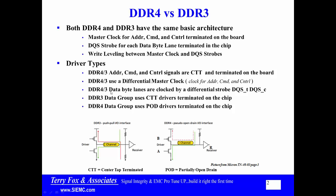DDR4 and DDR3 have data byte lanes clocked by a differential strobe called DQS_T and DQS_C for true and complement. In a 64-bit system, there are eight strobes — strobes 0 through 7. Strobe 0 takes data bits 0 through 7, strobe 1 takes bits 8 through 15, and so on. There is a strobe for every eight bits.